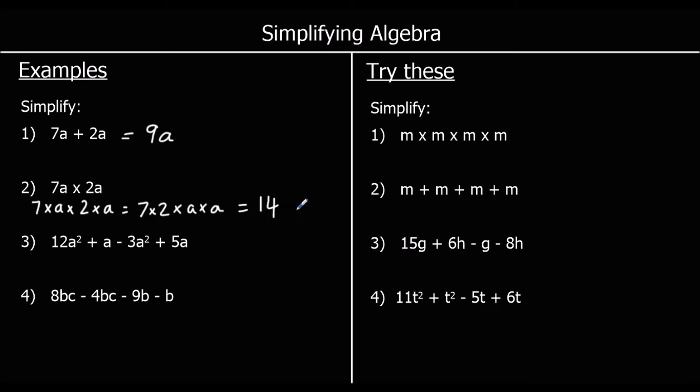If we've got a number multiplied by itself, we can say that's squared. 4 times 4 is 4 squared. 5 times 5 is 5 squared. So a times a is a squared. So we've got 14 times a squared. But we don't write the times sign in algebra. So we write 14a squared.